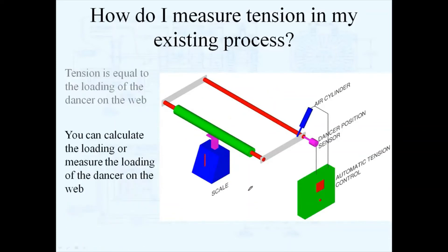You can calculate how much a dancer is loading your web, but you have to know the geometry of the dancer, where the cylinder is on the lever arm, and how much air pressure is coming into the cylinder. If you know the geometry, air pressure in the cylinder, and how your web is threaded through this dancer, you can calculate how much tension that dancer is putting on your web.